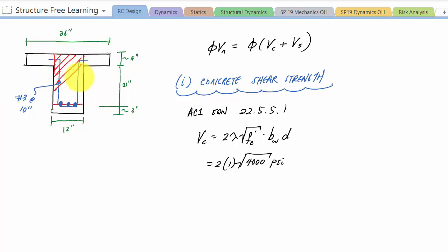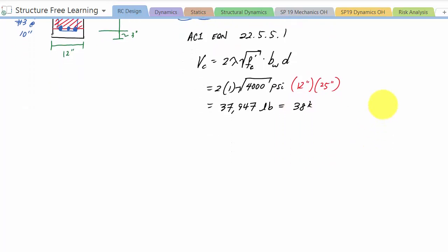And this red area is the area that is resisting the shear, that Vc. And so this bw would be 12 inches times a depth of 25 inches, 37,947 pounds, and this is equal to 37.9, let's just go with 38 kips. Then I look at my contribution of the steel.